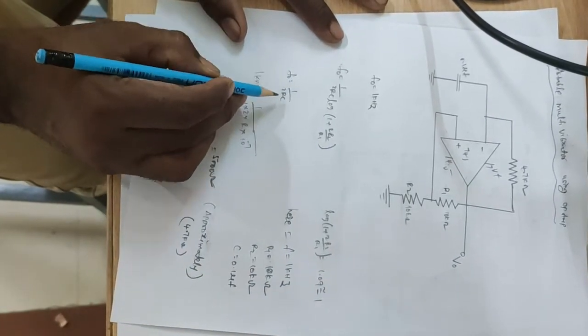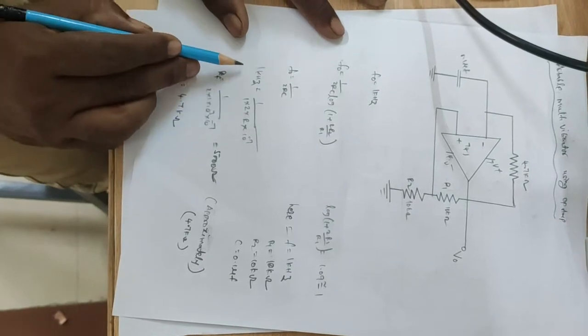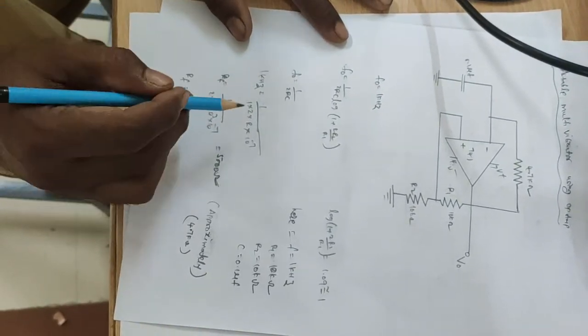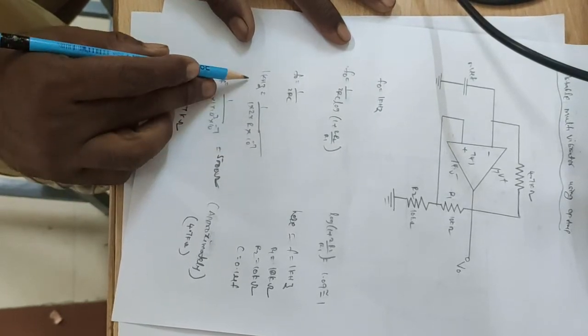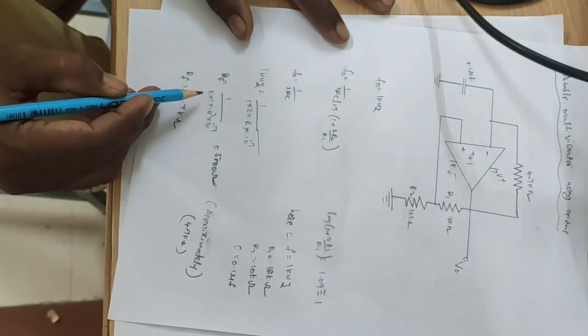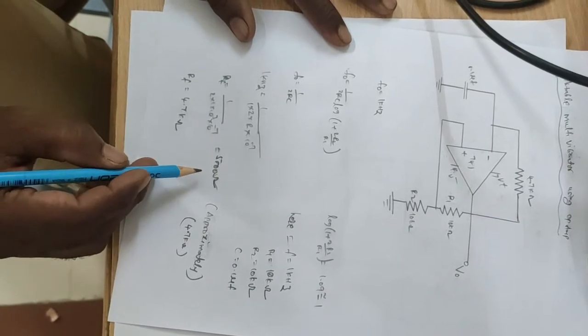So f equal to 1 by 2 Rc. Here f equal to assumption of 1 kHz, and c is 0.1 microfarad. Substitute the capacitance value and frequency value and calculate the resistor value. That resistance value is 5000 ohms.